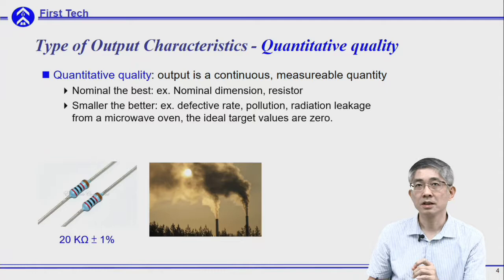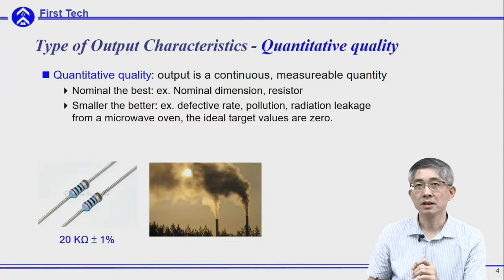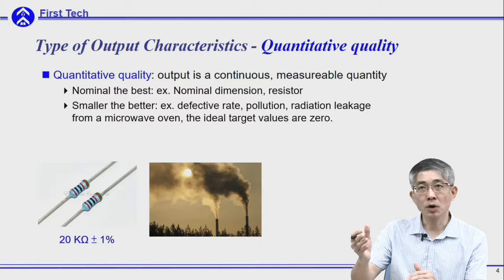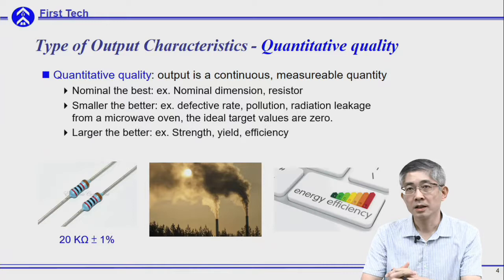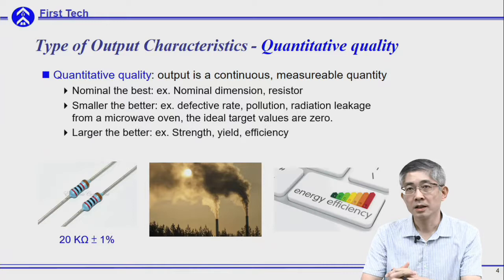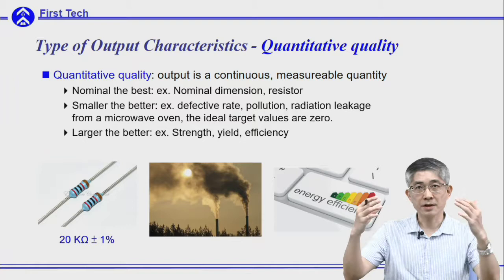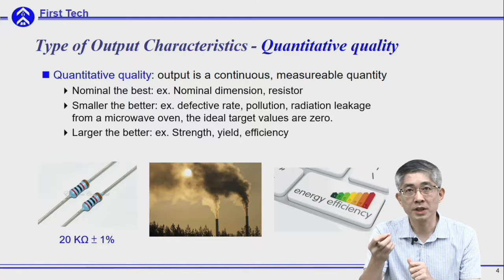The second type of quantitative quality is called smaller the better, such as the pollution of a power plant or radiation leak of a microwave oven — you want to reduce the pollution as small as possible. This pollution can be measured, so it is a quantitative quality and you would like it to be smaller the better. The last type is called larger the better, such as energy efficiency of the air conditioner or the strength of a structure — you hope the output will be larger the better.